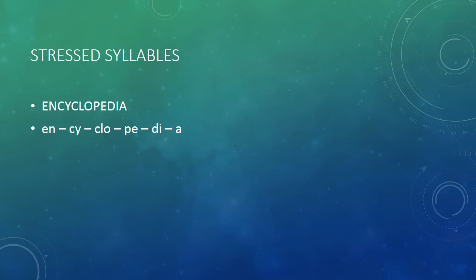How do we say encyclopedia? Do we say encyclopedia, encyclopedia, encyclopedia, encyclopedia? Which one sounds the most natural? Which one is correct? It's the fourth syllable, the P, so we say encyclopedia, not encyclopedia. The PE syllable gets stressed. And in English, the stressed syllable is basically arbitrary. We just have to know which syllable to stress — you can't just look at the word and know that the P in encyclopedia is stressed. You just have to know it, usually because you've heard someone else say it.